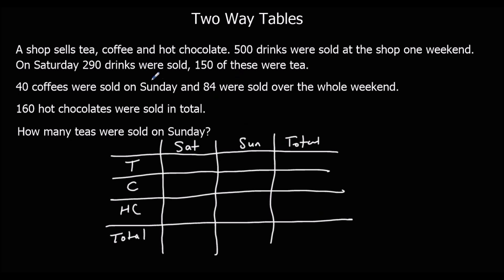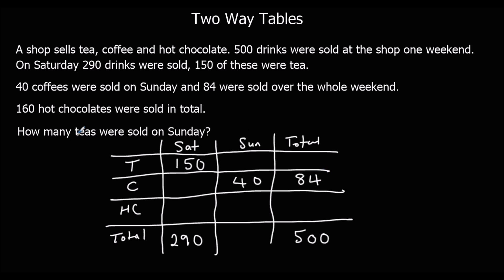Let's start filling in the information. 500 drinks were sold in total, so the grand total is 500. On Saturday, 290 drinks were sold. There were 150 teas on Saturday, 40 coffees on Sunday, 84 coffees over the whole weekend, and 160 hot chocolates in total.